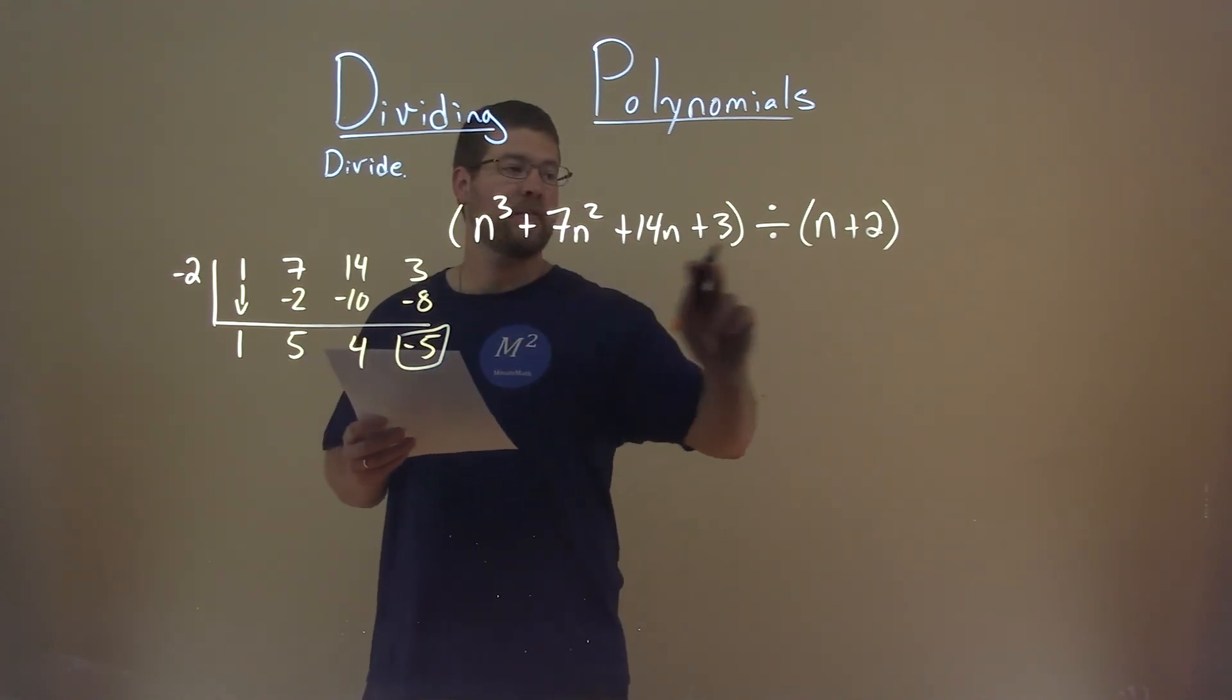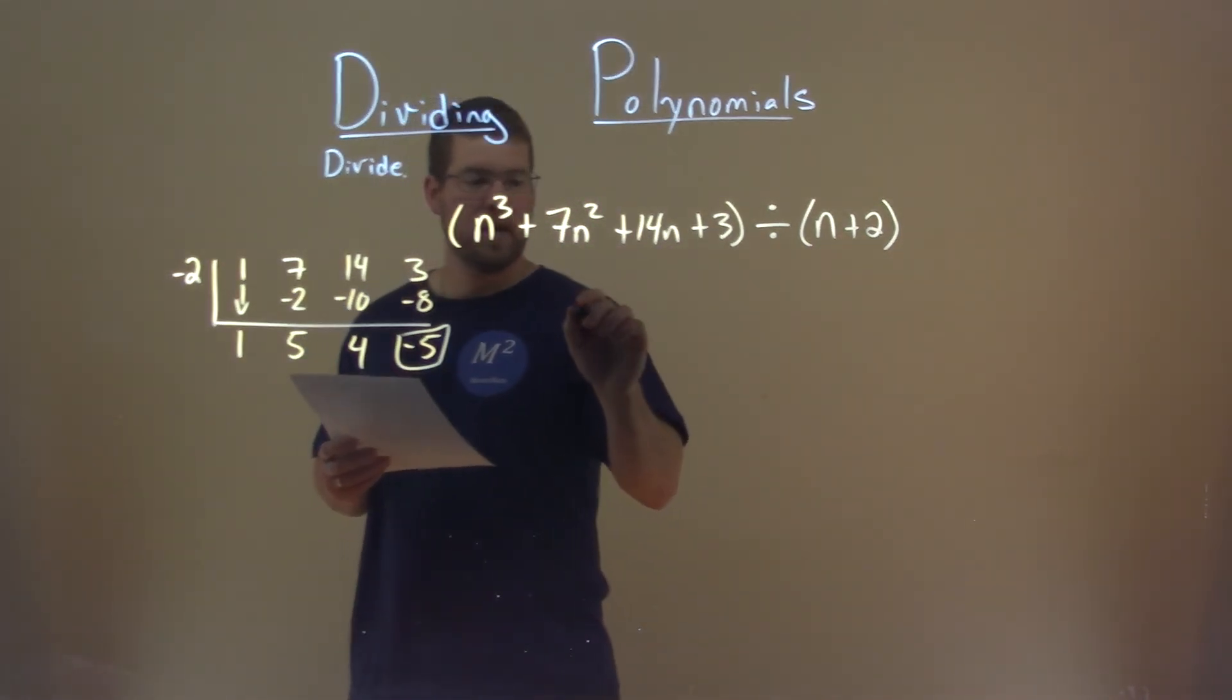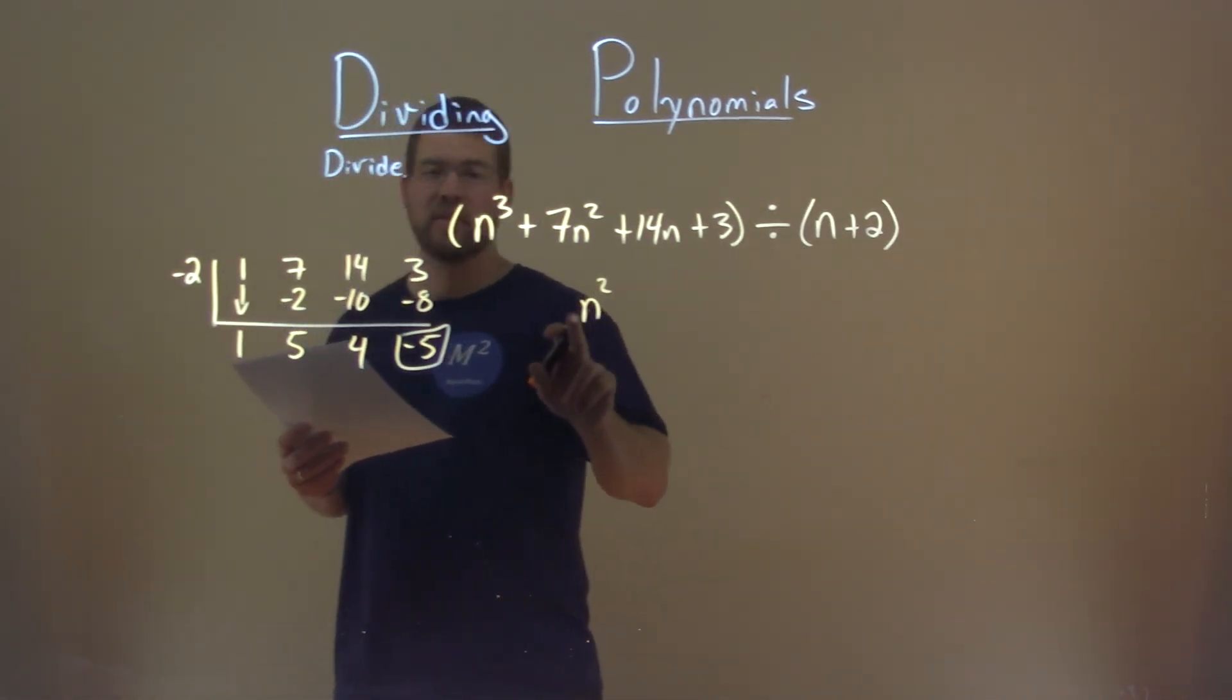n to the third divided by n is an n squared, and that's our first value. We have n squared. Its coefficient is 1. That goes right here. Don't need to write that.